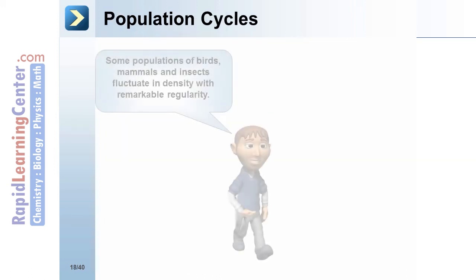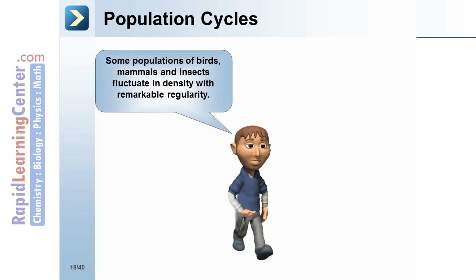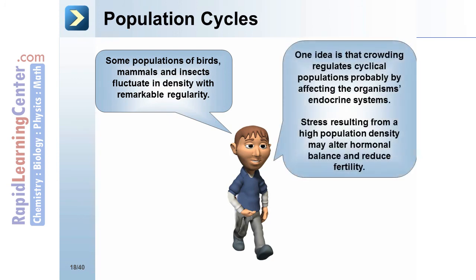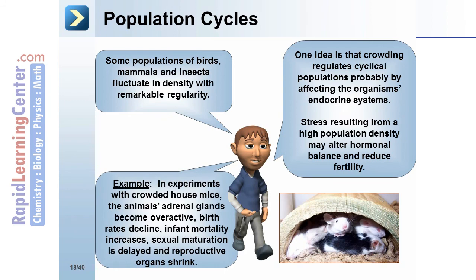Some populations of birds, mammals, and insects fluctuate in density with remarkable regularity. One idea is that crowding regulates cyclical populations, probably by affecting the organisms' endocrine systems. Stress resulting from high population density may alter hormonal balance and reduce fertility. In experiments with crowded house mice, the animals' adrenal glands became overactive, birth rates declined, infant mortality increased, sexual maturation was delayed, and reproductive organs shrank.